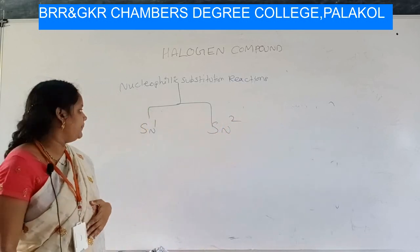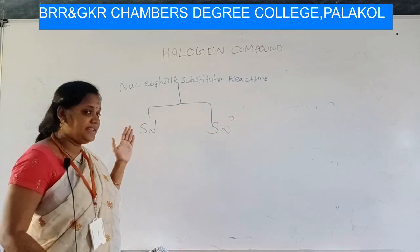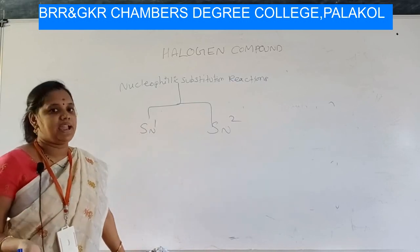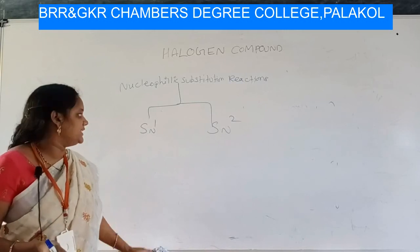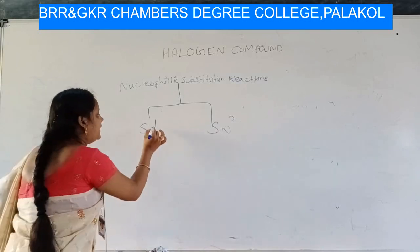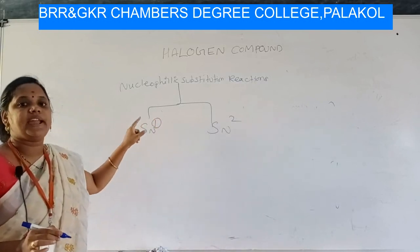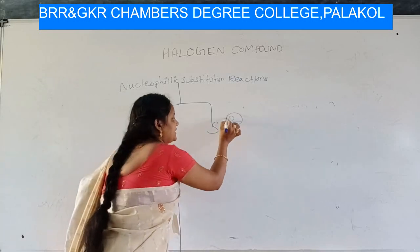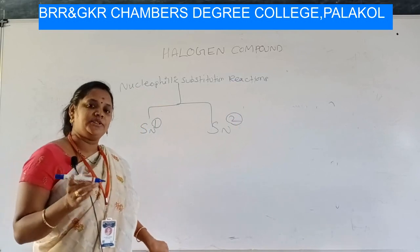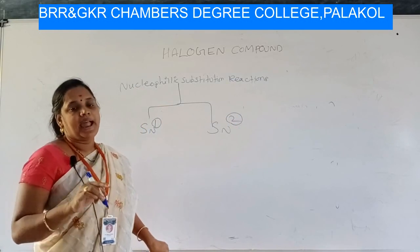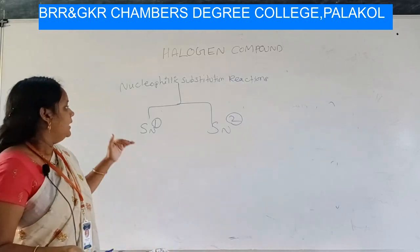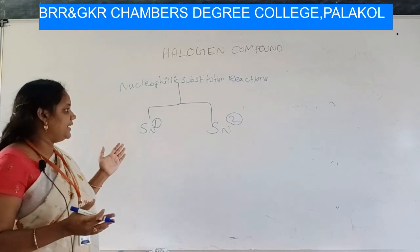In this halogen compounds chapter, SN1 and SN2 reactions are very, very important — they may be asked as short answer questions. The number '1' in SN1 represents unimolecular: the rate of reaction depends on only one molecule. The number '2' in SN2 represents bimolecular: the rate depends both on the concentration of alkyl halide and the nucleophile.